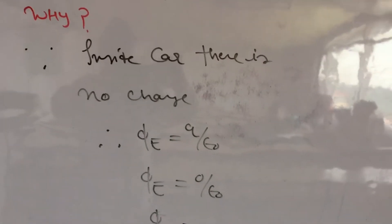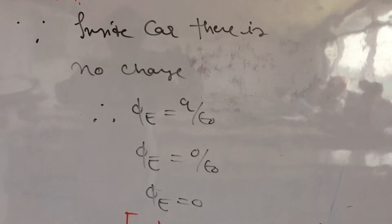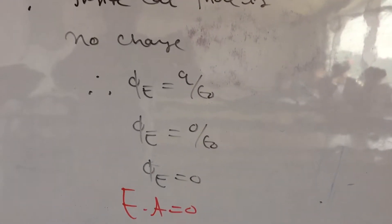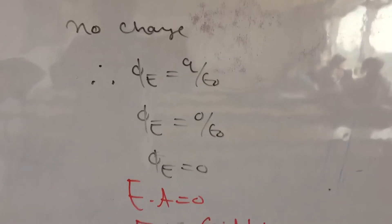By Gauss theorem, phi e equal to q upon epsilon naught. Inside car, there is no charge when phi is equal to 0 upon epsilon naught. Therefore, phi is equal to 0.